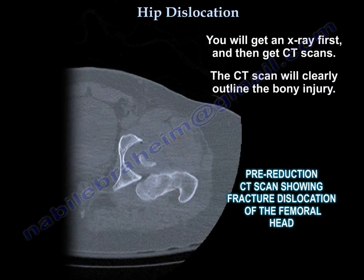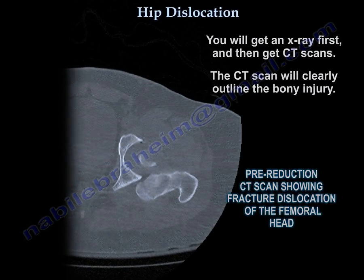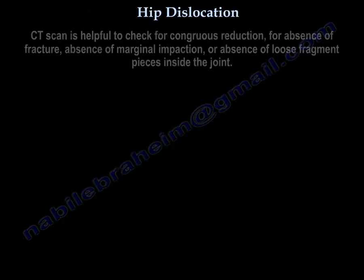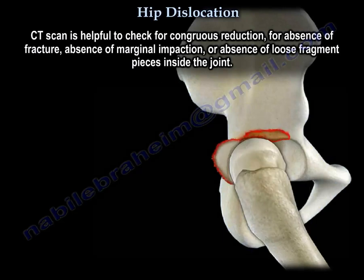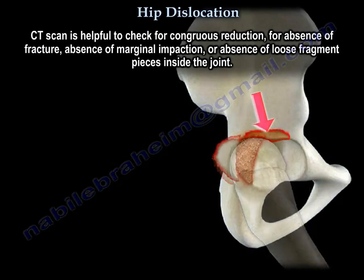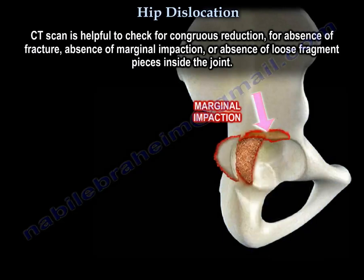The CT scan will clearly outline the bony injury. It will be helpful to check for congruent reduction, absence of fracture, absence of marginal impaction, and absence of loose fragment pieces inside the joint.